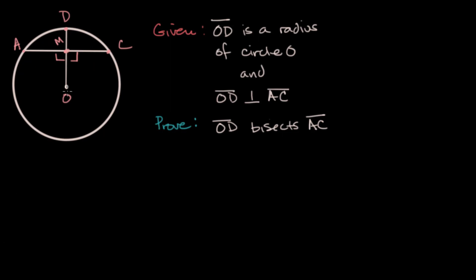So we have this circle, call it circle O, based on the point at its center. And we have the segment OD, and we're told that segment OD is a radius of circle O.